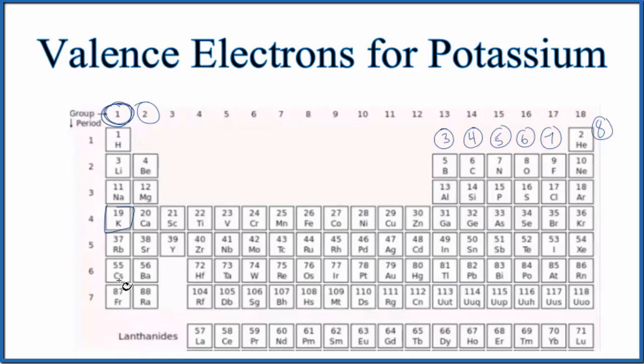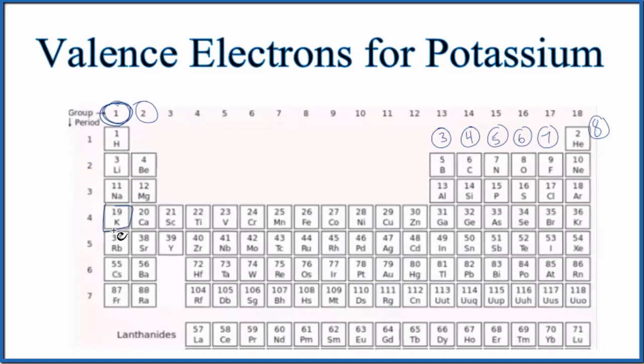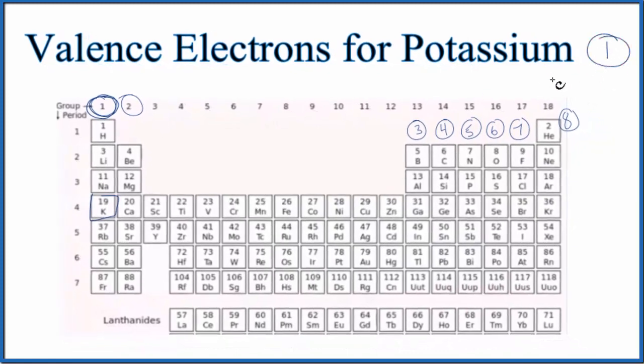And all of the elements in group 1, like hydrogen, lithium, sodium, they all have one valence electron. So potassium has one valence electron.